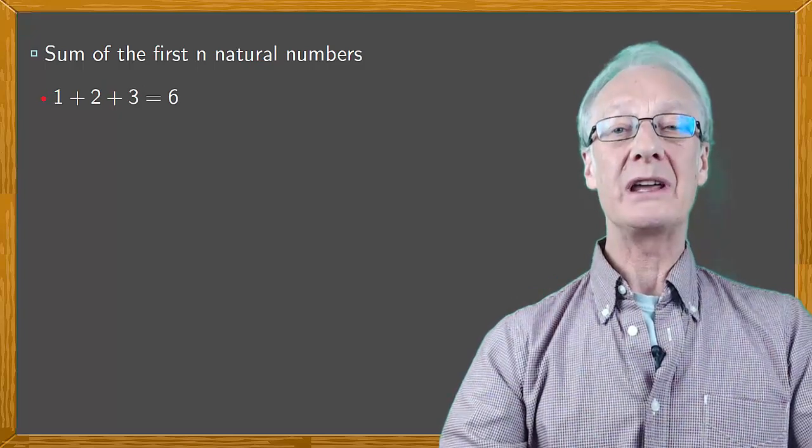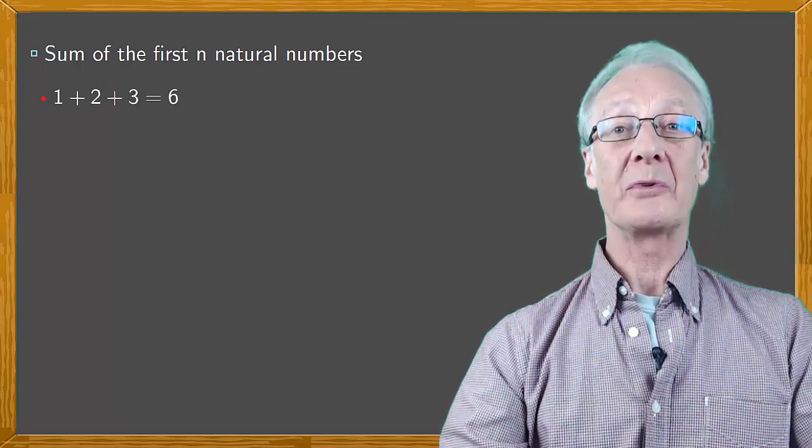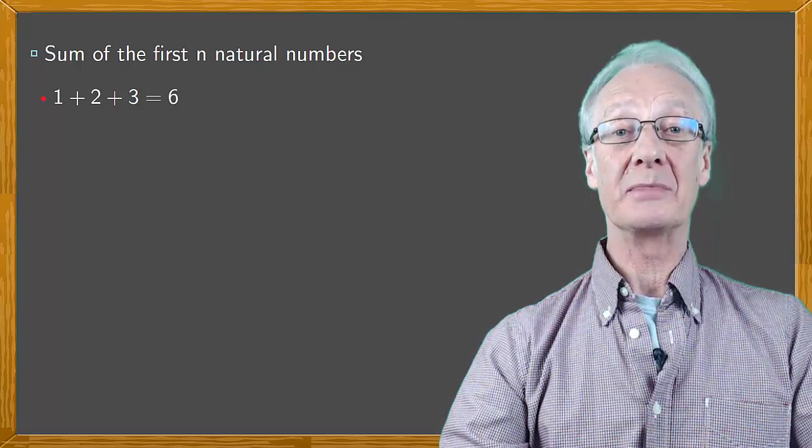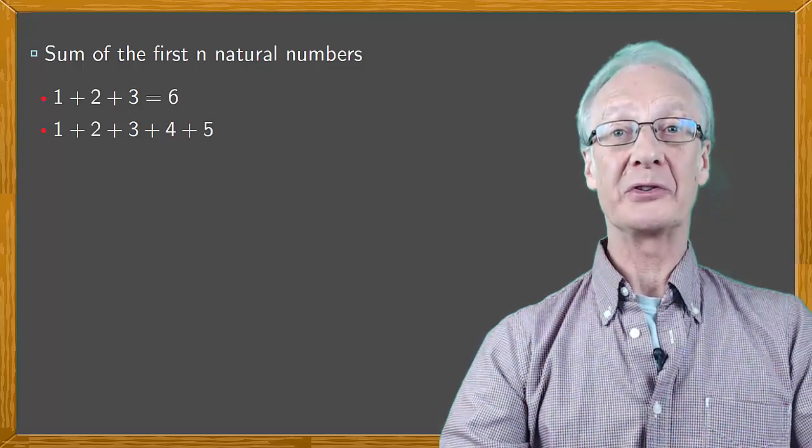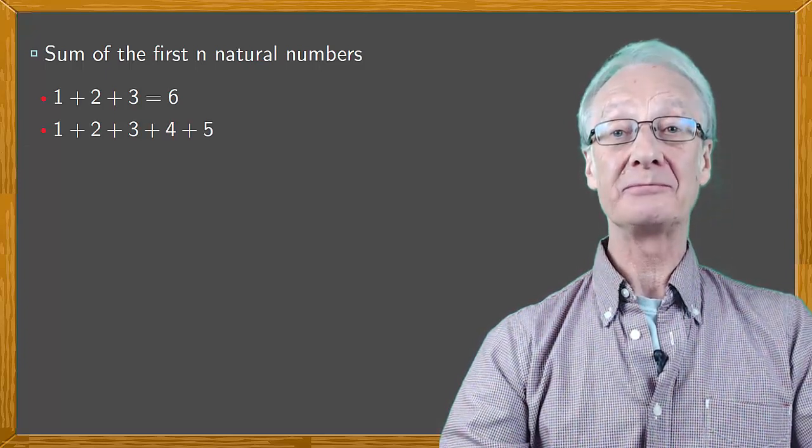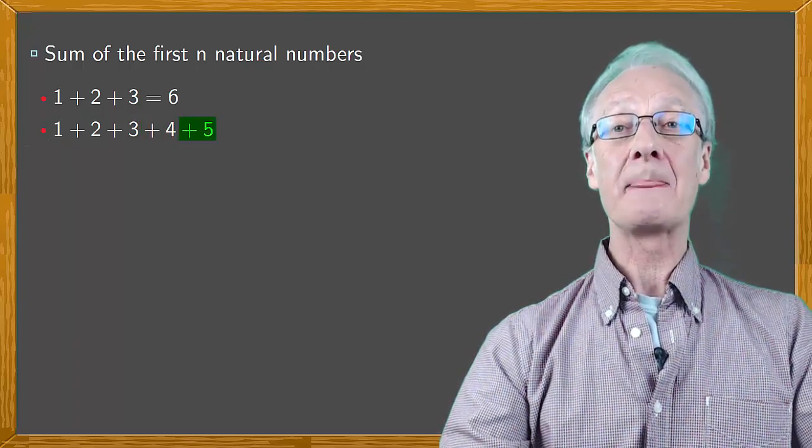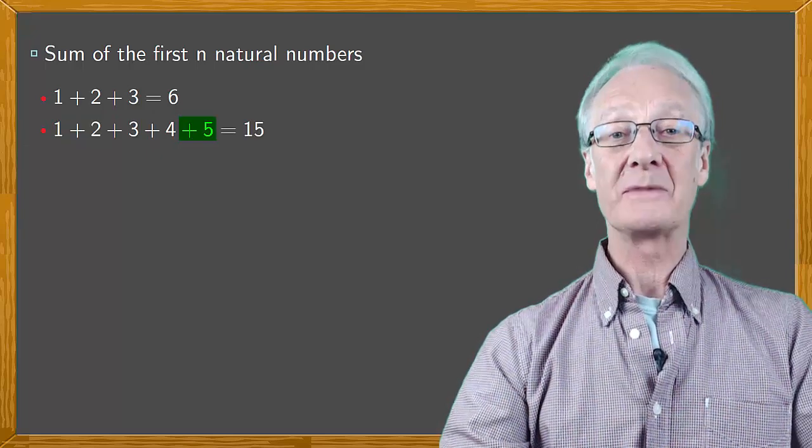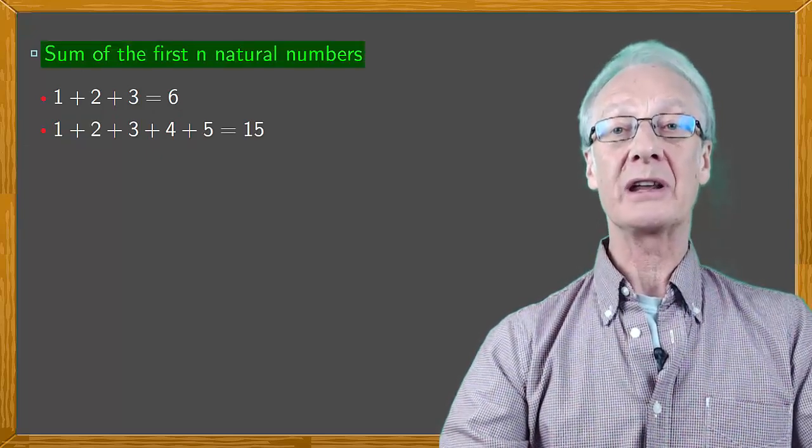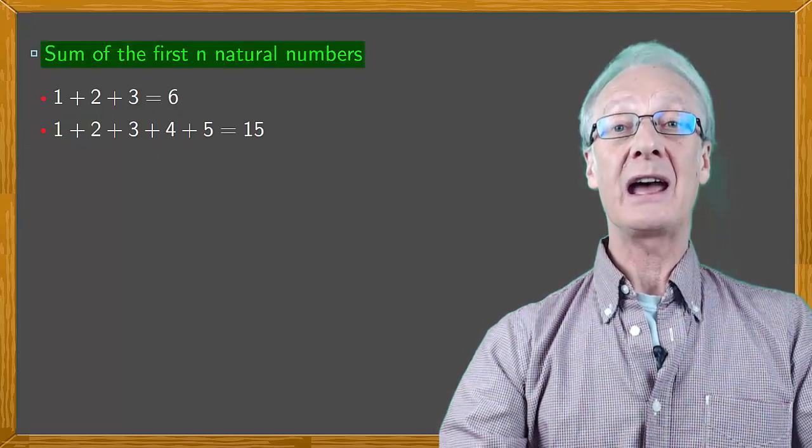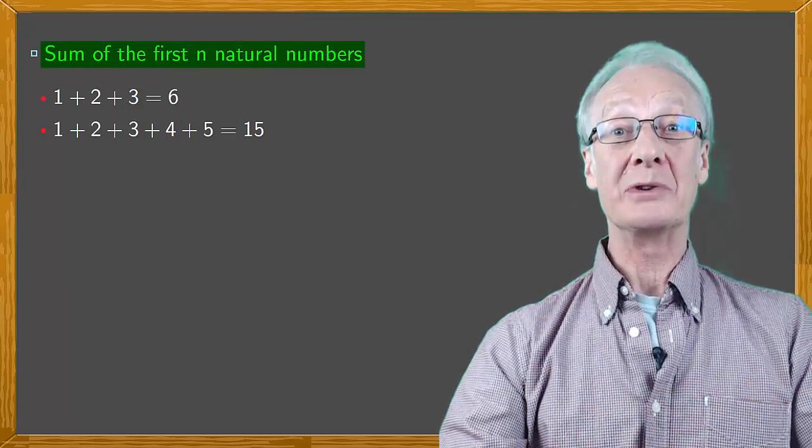In the same way, if I ask you to calculate what's the sum of the first five natural numbers, which is 1 plus 2 plus 3 plus 4 plus 5, then you do 1 plus 2 is 3, plus 3 is 6, plus 4 is 10, plus 5 is 15. So we understand perfectly what has to be done, and there's a straightforward way of doing it.